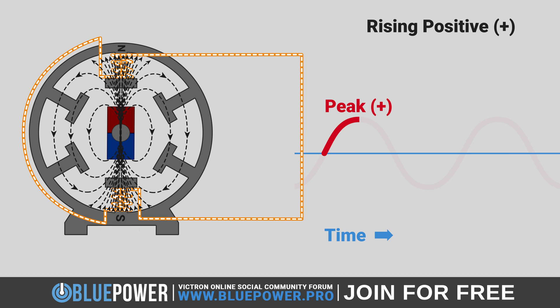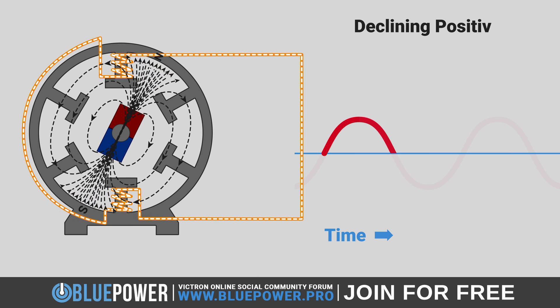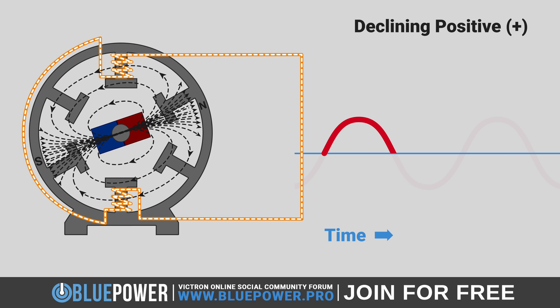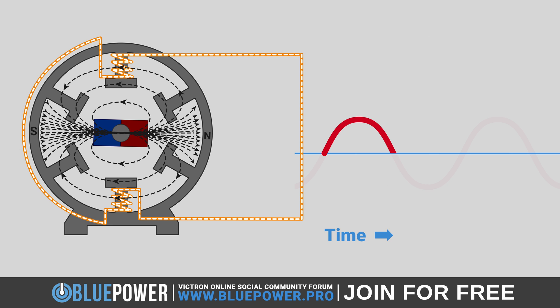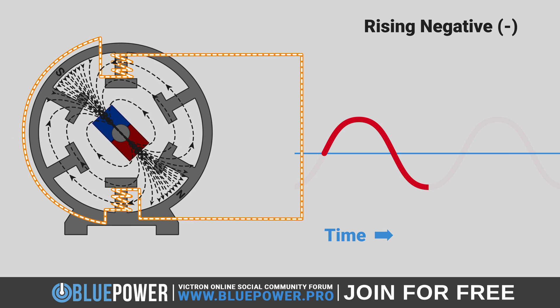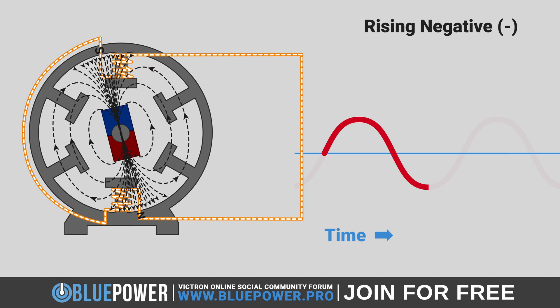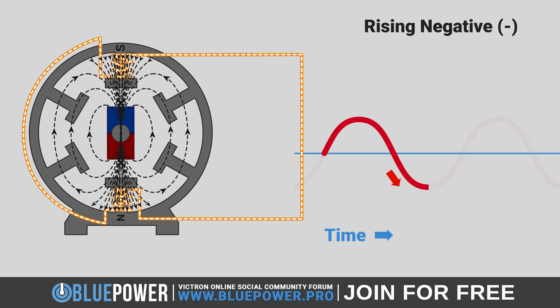The peak of the sine wave corresponds to the maximum positive voltage or current generated. As the magnet continues to rotate past this peak alignment, the magnetic field's influence on the coil decreases until the next transitional zone is aligned, reducing the induced current back to zero — marking the completion of the positive half cycle. The rotation continues, bringing the south pole into alignment with the coil. This induces a current in the opposite direction, represented by the descending part of the sine wave from the zero point into negative values, corresponding to the maximum negative voltage or current — the trough of the sine wave.